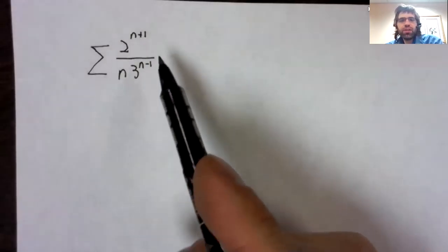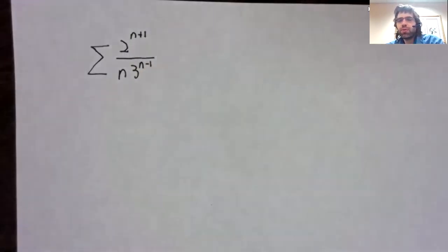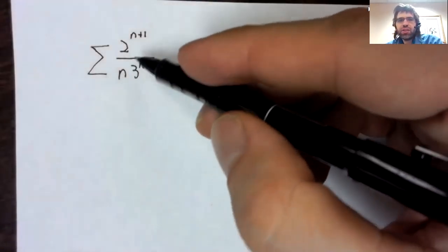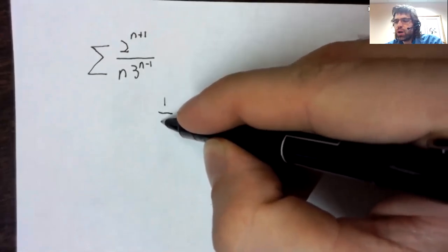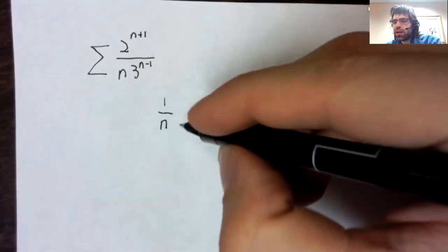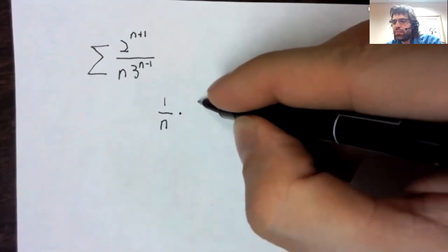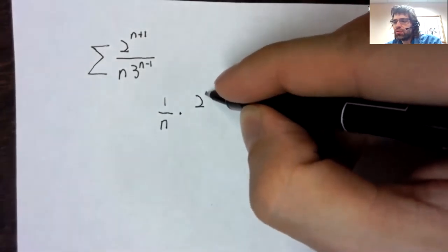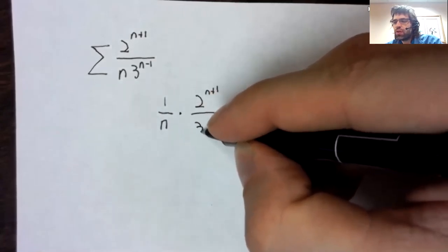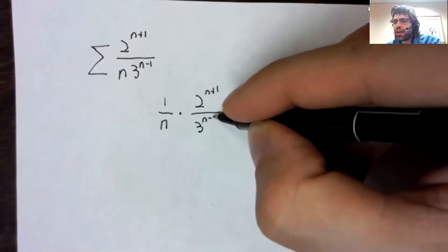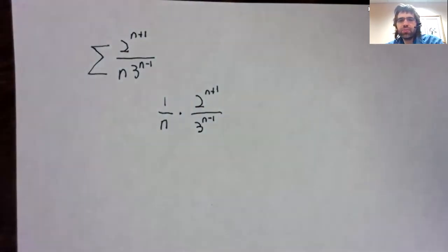I don't know if the ratio test might work here. But what I see when I look at this is one divided by n times two to the n plus one over three to the n minus one.